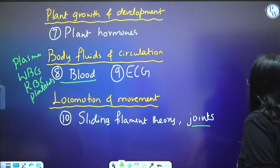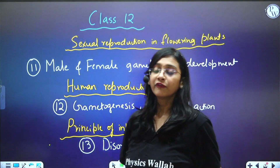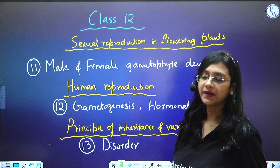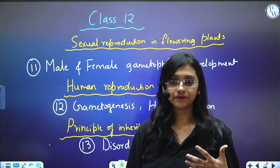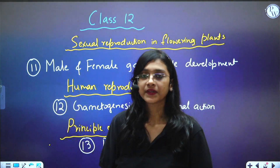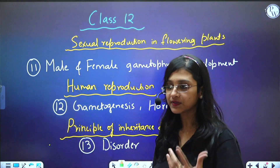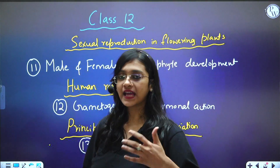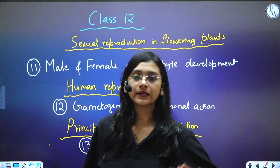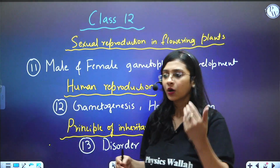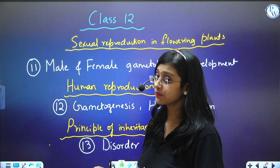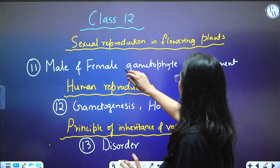Moving to Class 12 biology chapters — from Sexual Reproduction in Flowering Plants, male and female gametophyte development is very important. This includes pollen grain development, embryo sac (female gametophyte development), pollen germination, how many gametes a pollen grain contains, and what happens inside the ovule. Entire male and female gametophyte development — questions have been asked from this topic continuously.